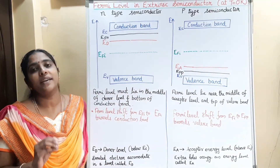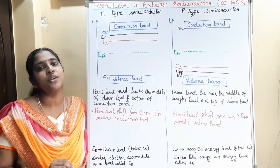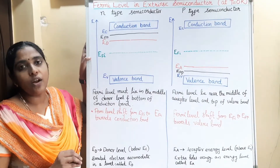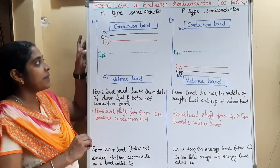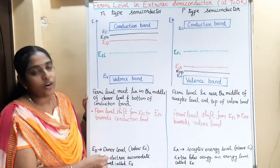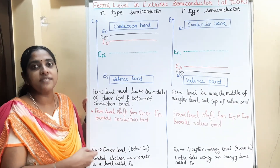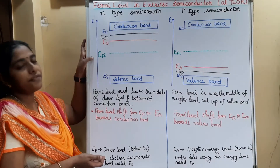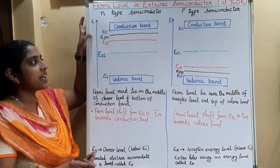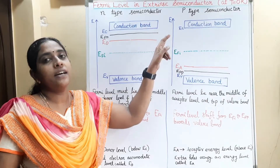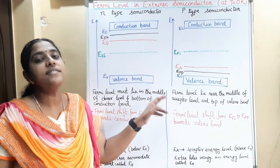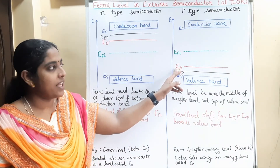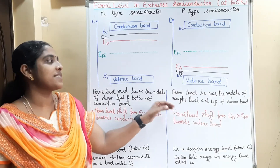This is the Fermi level diagram for extrinsic semiconductor at T equal to 0 Kelvin. In an intrinsic semiconductor, the Fermi level is exactly at the middle of the forbidden energy band. But in n-type semiconductor, due to the donor energy level — where donated electrons accommodate themselves — EFI shifts upwards towards the conduction band. And in p-type semiconductor, the acceptor atoms create holes occupying an energy level called the acceptor energy level, and therefore EFI shifts downwards towards the valence band.